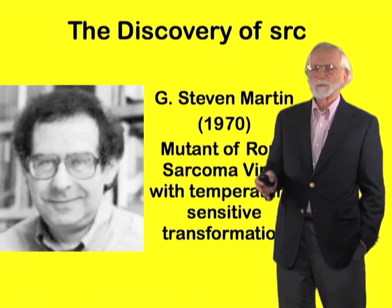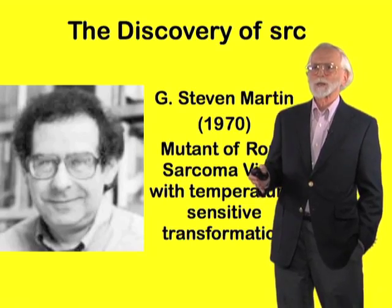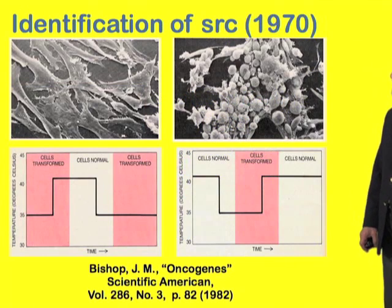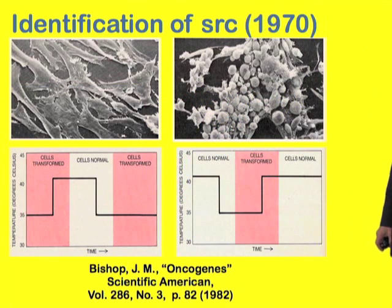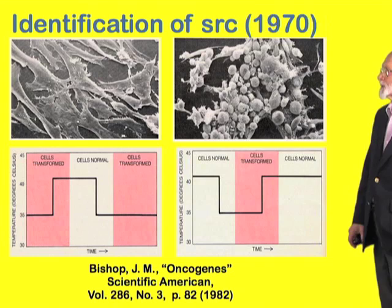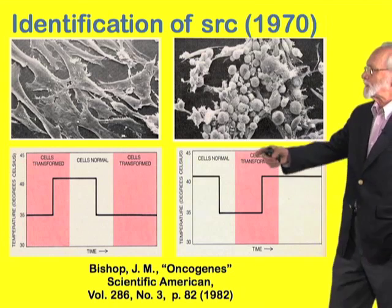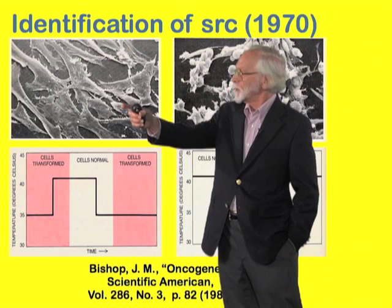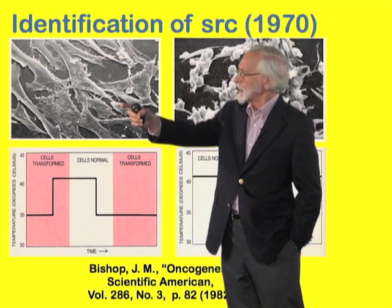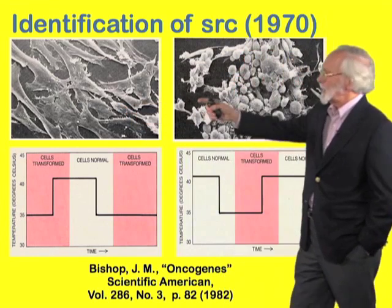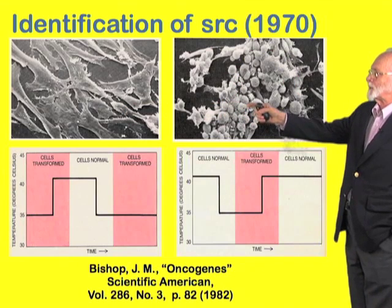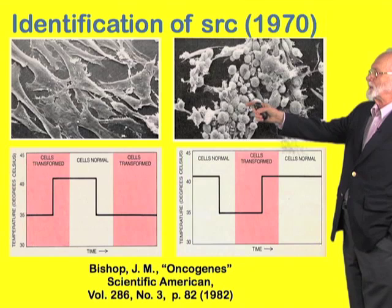In other words, the virus could create a cancer cell at one temperature but not at another. Here's an illustration of what Stephen Martin had discovered. These are normal chicken fibroblasts growing in culture, and here's what those fibroblasts looked like a mere 24 hours after having been infected with Rous's sarcoma virus.